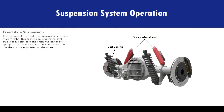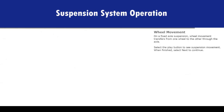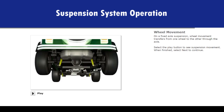The purpose of the fixed axle suspension is to carry more weight. This suspension is found on light trucks or full-size cars and often has leaf or coil springs on the rear axle. A fixed axle suspension has the components listed on screen. On a fixed axle suspension, wheel movement transfers from one wheel to the other through the axle.